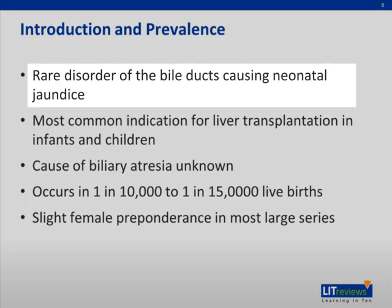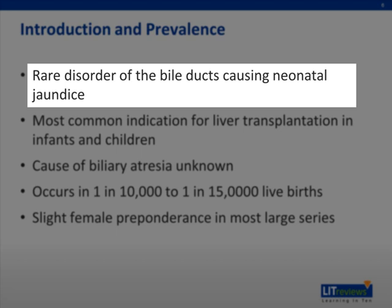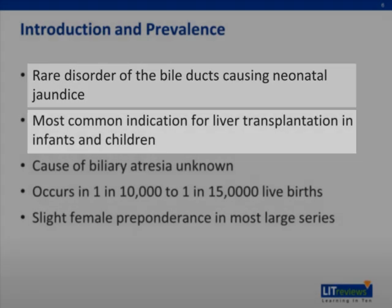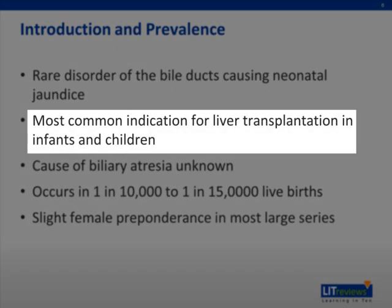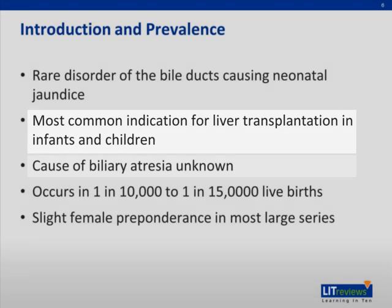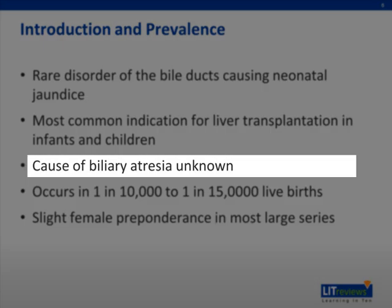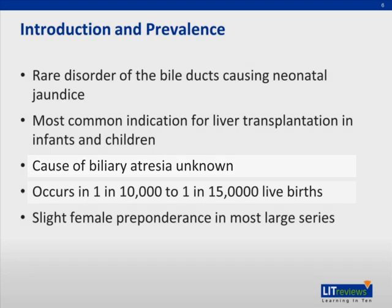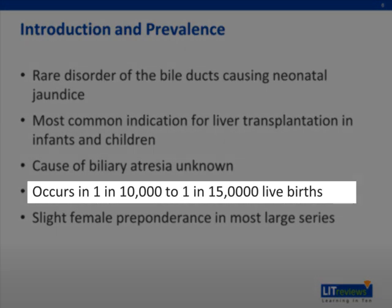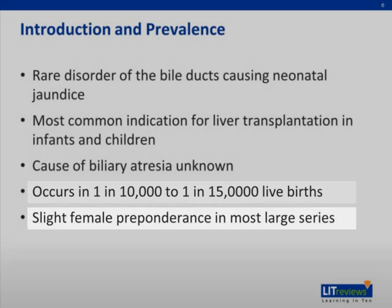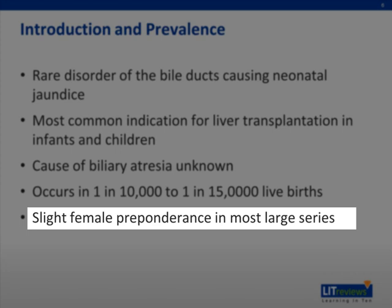Biliary atresia is a rare disorder of the bile ducts causing neonatal jaundice. It is the most common indication for liver transplantation in infants and children. Although there has been intensive investigation, the cause of biliary atresia is unknown. It occurs in 1 in 10,000 to 1 in 15,000 live births. Several studies have demonstrated a slight female preponderance.